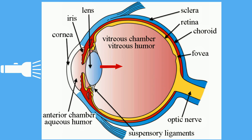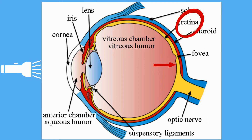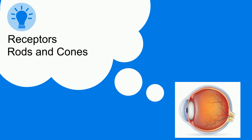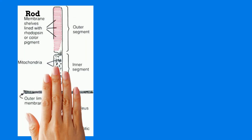After passing through the lens, the light passes through a jelly-like fluid and reaches the back of the eye, onto a surface called the retina. The retina is filled with tiny receptors called rods and cones. There are over 130 million receptor cells, and there are two main types: rods and cones.